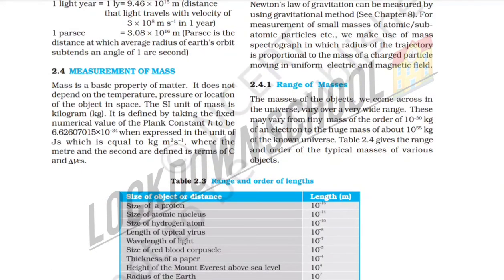Next, section 2.4.1: Range of mass. The mass of objects we come across in the universe varies over a very wide range. These may vary from the tiny mass of an electron, on the order of 10⁻³⁰ kilograms, to the huge mass of the known universe, on the order of 10⁵⁵ kilograms.